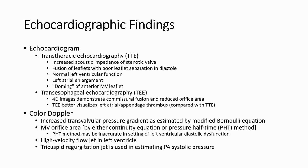Echocardiographic findings for mitral valve stenosis: we will see increased acoustic impedance of the stenotic valve, fusion of leaflets with poor leaflet separation in diastole, normal left ventricle function, left atrial enlargement, and doming of the anterior mitral leaflet. On Doppler, we will see increased transvalvular pressure gradient as estimated by the modified Bernoulli equation, mitral valve orifice area, high-velocity flow jet in left ventricle, and tricuspid regurgitation jet used in estimating pulmonary artery systolic pressure.